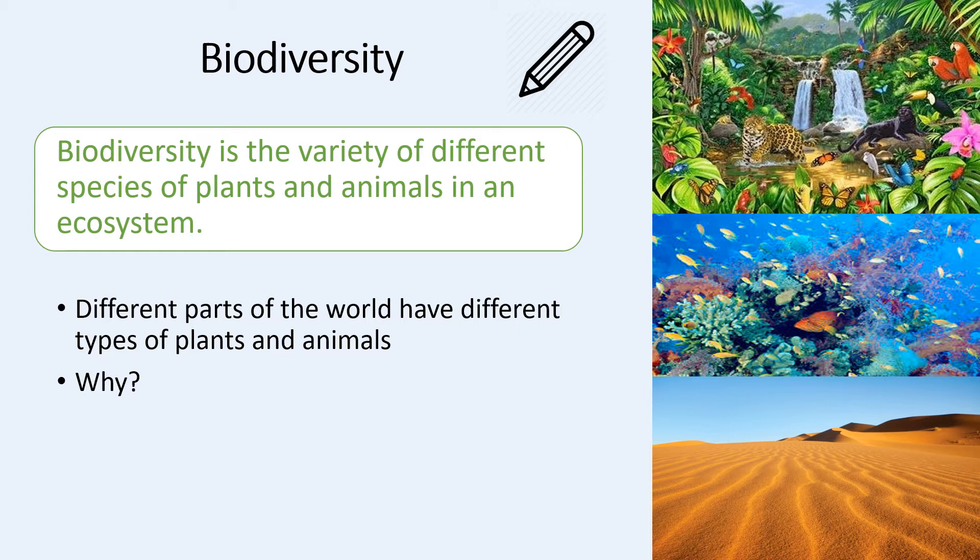The answer is that different parts of the world have different plants and animals because different parts of the world have different climates. They have different climates, different pHs, different oxygen levels and different water levels. The type of climate and conditions doesn't suit every organism.